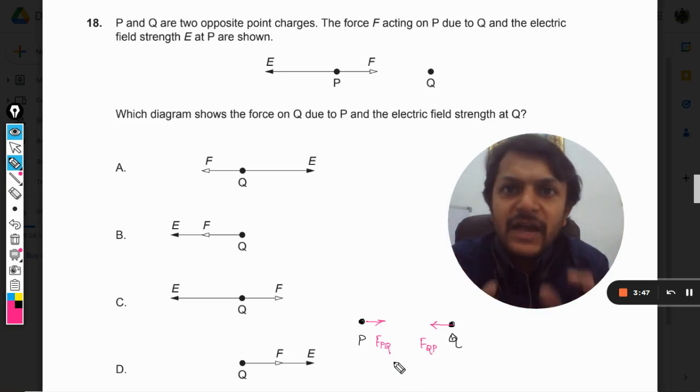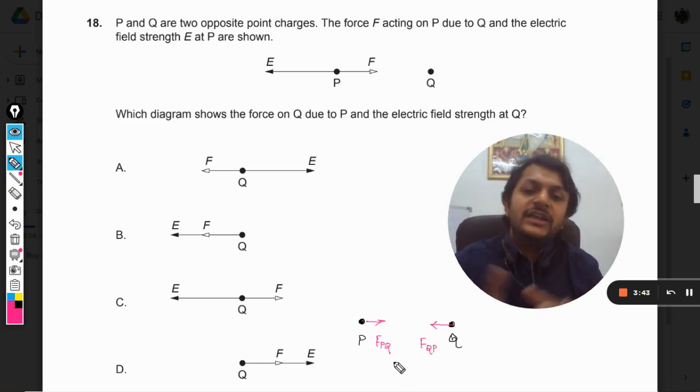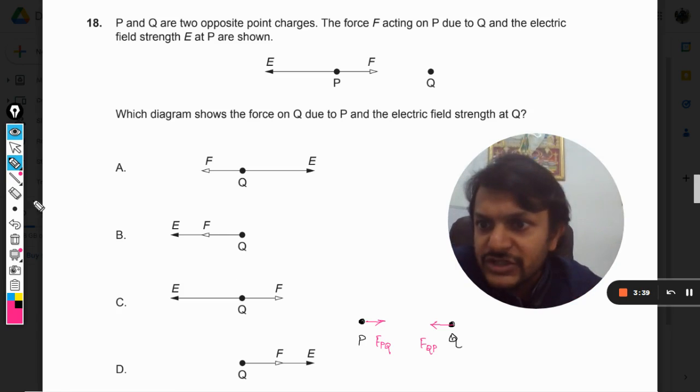Both of the forces make an action-reaction pair according to Newton's third law also. So they are equal as well as opposite to each other and both of them are Coulombic forces. Now moving next, they are talking about the electric field strength.